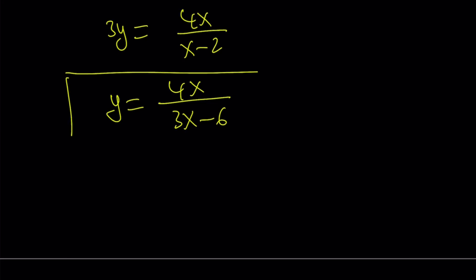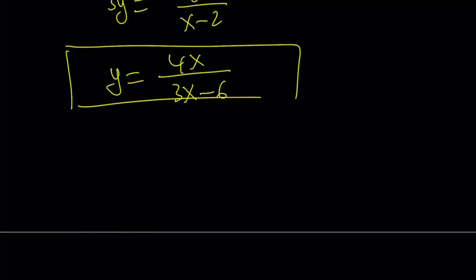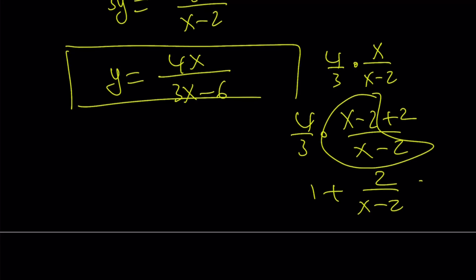So that's the rational function we're looking at. And if you kind of try to break it down, you can take out 4 thirds and then write this as x over x minus 2. And then you can write this as x minus 2 plus 2 over x minus 2, multiply by 4 thirds. And this is going to give you 1 plus 2 over x minus 2. So you can proceed in many different ways.